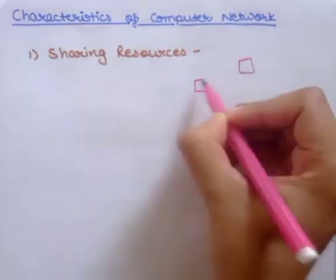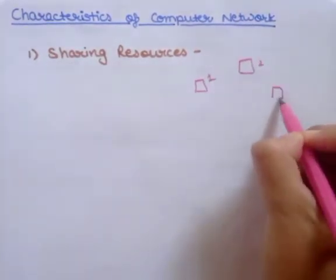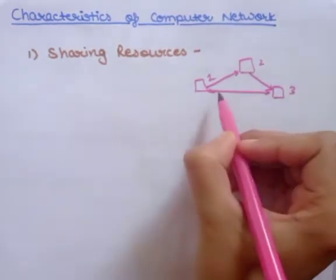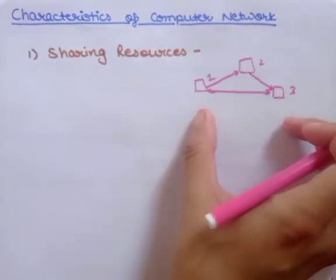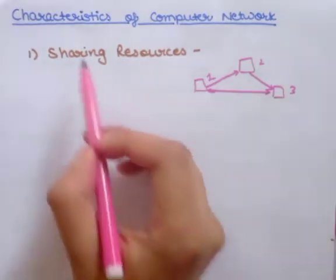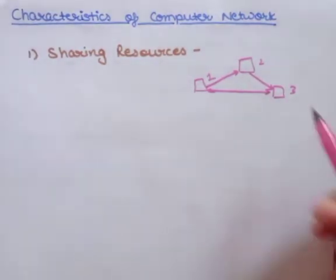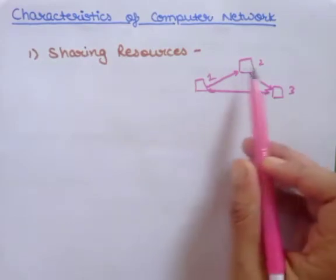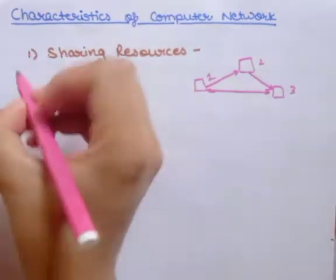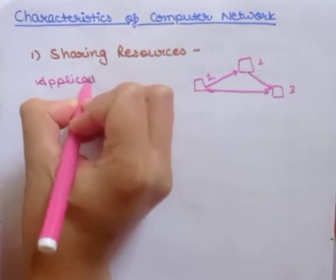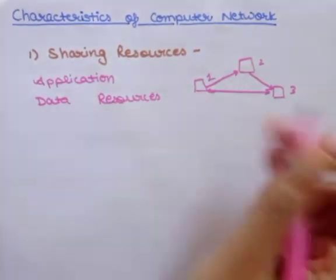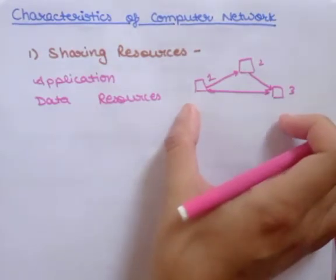For example, this is computer one, computer two, and this is computer three. If all these computers are connected with the help of internet or any other network, then it becomes very easy to share data among all these devices. So sharing resources — any type of data, any type of applications, any type of resources — becomes very easy if we connect all these computer systems with the help of a network.